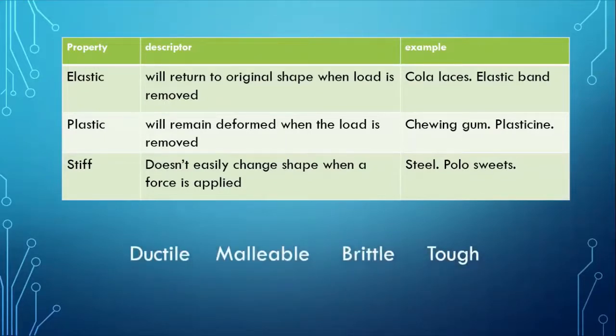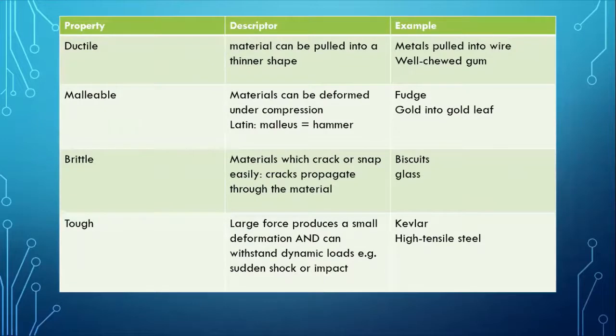So what do we mean by ductile? Malleable, brittle, tough. Think about these for a moment. Ductile? Yeah, a ductile material can be pulled into a thinner shape. Metals are ductile because they can be pulled into a wire. Well chewed chewing gum can be pulled into a thinner shape.